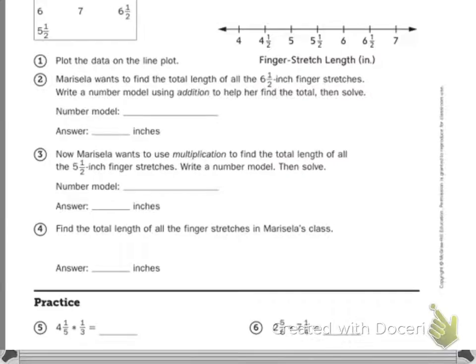Number 3 says Marcella wants to use multiplication to find the total length of all the 5½ inch finger stretches. Write a number model then solve. So my hint to you is it's going to start with 5½ times however many 5½s there were, and then you'll find your answer.